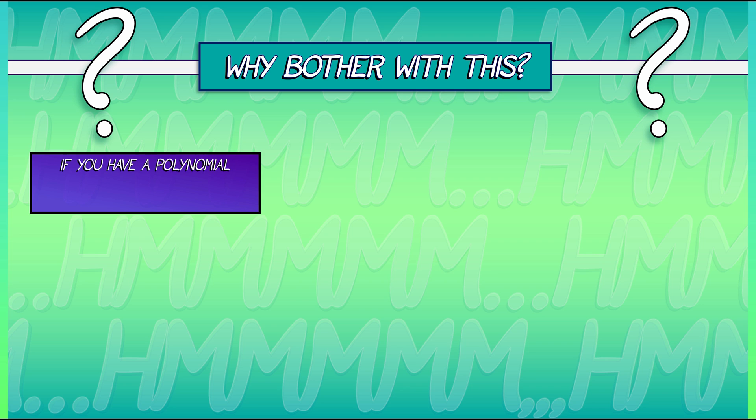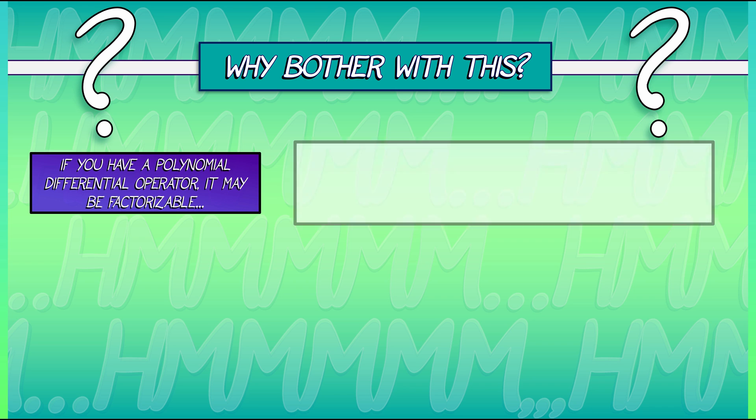Here is a bit of a hint. Let's say that you have a polynomial differential operator. Something that can be written out in terms of powers of D. Something like D squared plus 3D plus 2I. That's like D squared plus 3 times D to the 1 plus 2 times D to the 0. Okay, that can be factored just like a polynomial. In this case, this can be factored into D plus 2I times D plus I.